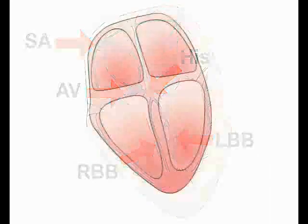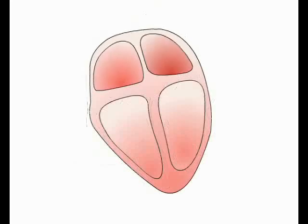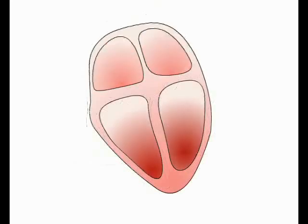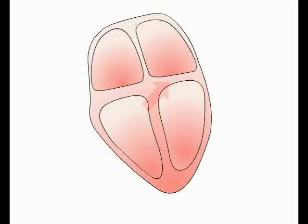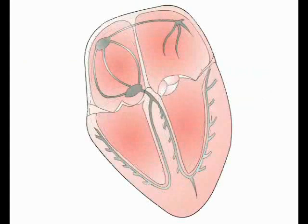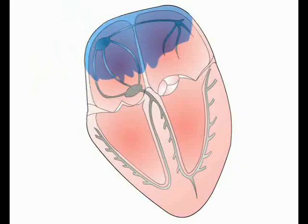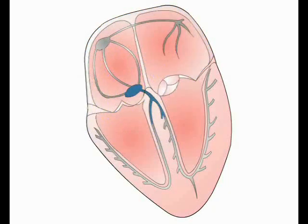During each cardiac cycle, the atria contract in diastole to fill the ventricles, which then contract during systole to supply blood to the lungs and the systemic circulation. Contraction of the atria and ventricles is tightly coordinated by a wave of depolarization spreading through the muscular walls of these chambers. The depolarization wave seen here in blue reflects movement of charge across myocyte membranes and is in effect an electrical current spreading through the heart.